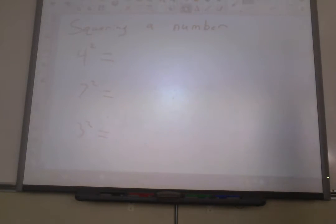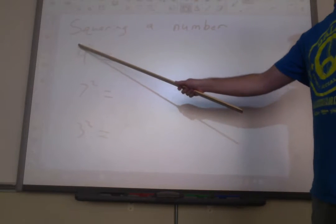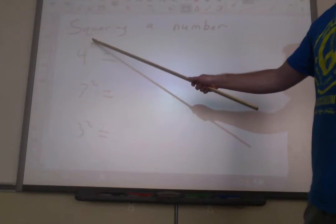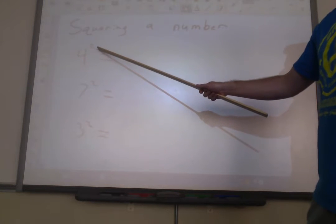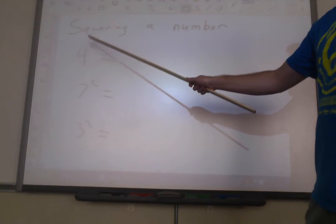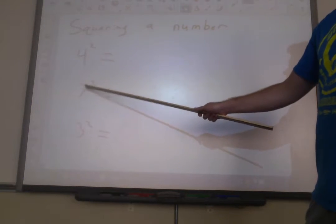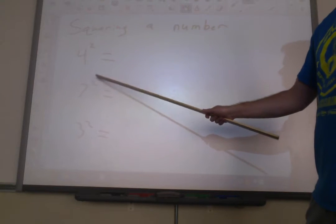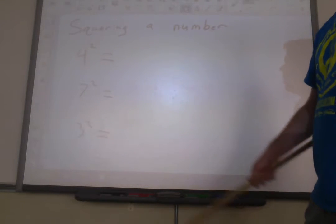Okay, but first of all, squaring a number looks like this. You take a number 4, that's the base number, and then you take it to an exponent of 2. So we call this 4 squared. We would call this one 7 squared, and this would be 3 squared.